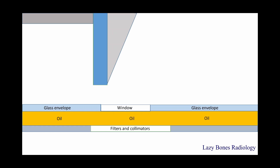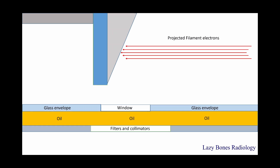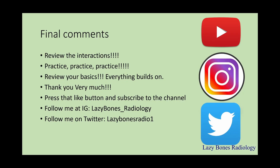Now let's look at the entire picture. As the projecting filament electrons travel from the cathode to the anode, they strike the tungsten target disk, which causes heat production, brem, and characteristic interactions to happen at the same time. As the photons are released, the majority are absorbed through the inherited filtration, and 99% of interactions — heat production — are absorbed in the oil surrounding the entire x-ray tube. In the next videos, I'll be talking about how the photons released from the x-ray tube interact inside of the body and form our x-ray pictures. Remember to review the interactions and practice, practice, practice — everything builds on top of each other. Thank you very much for watching. Don't forget to press the like button, subscribe to the channel, and share with your friends so we can all learn together. You can also follow me on lazybones_radiology and on Twitter at lazybonesradio1. Thank you very much. Have a great day!